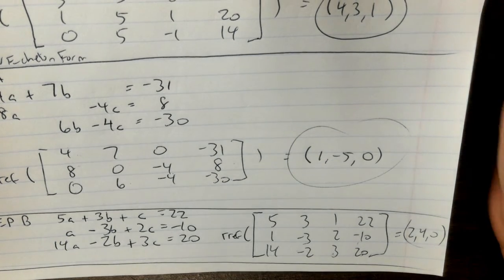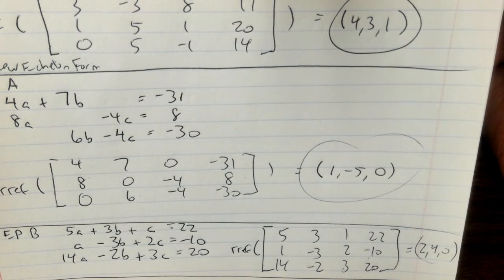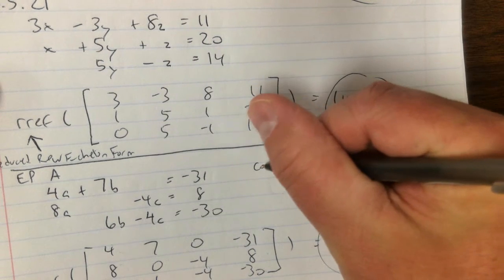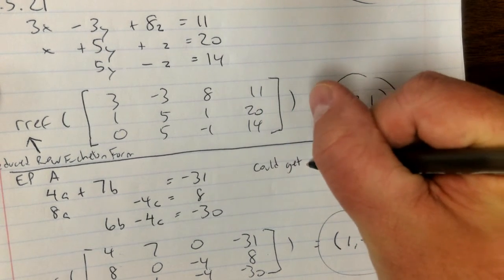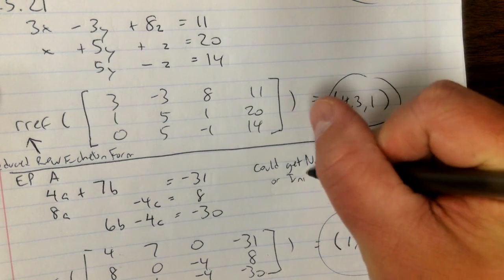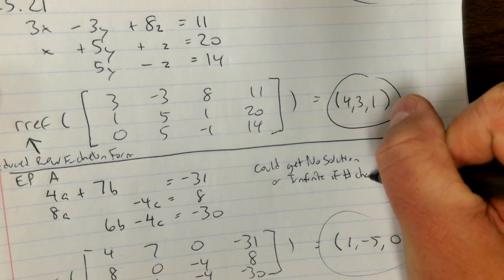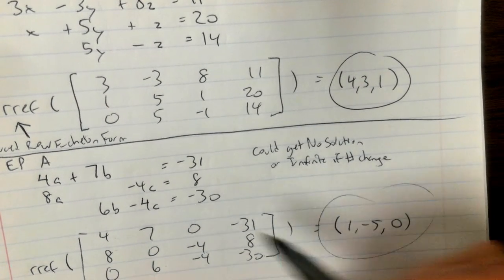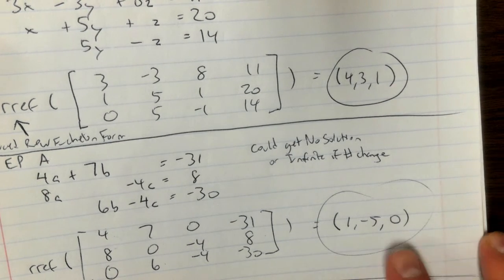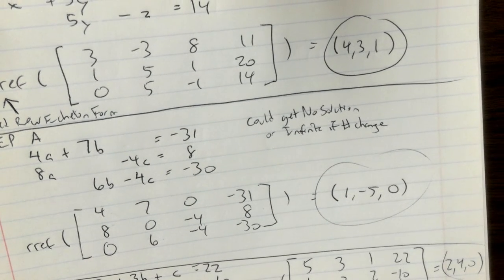That's basically the assignment. It's possible, when the numbers change, that you could get no solution or infinite solutions. But on my example every time I went through it I had specific numbers, so it just depends on how lucky you are, so to speak. Okay, have a good one.